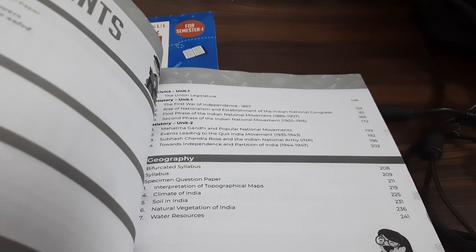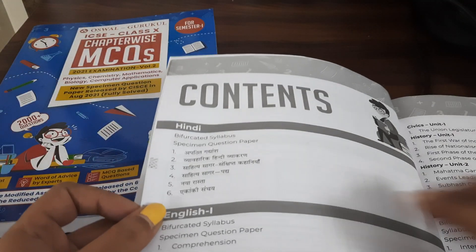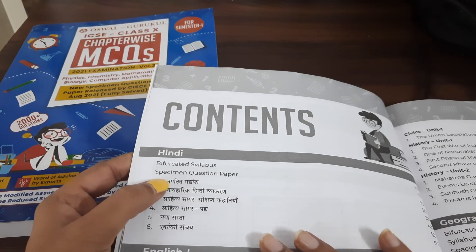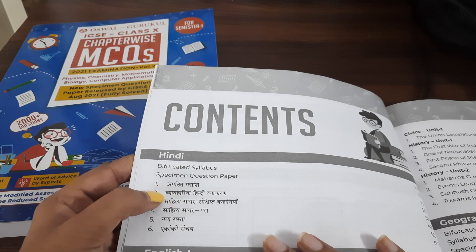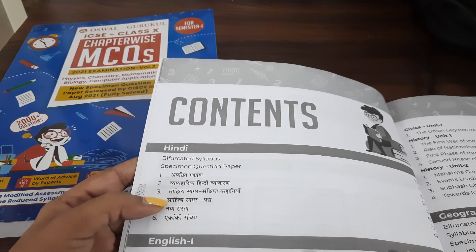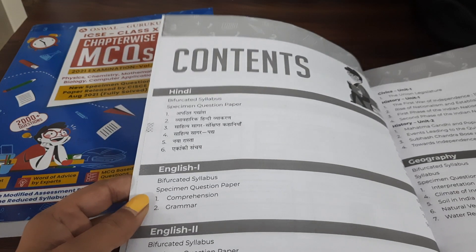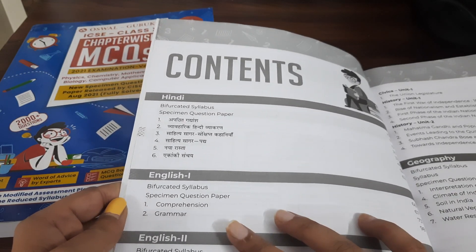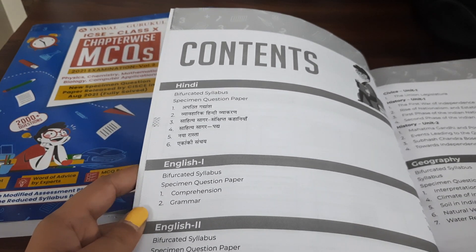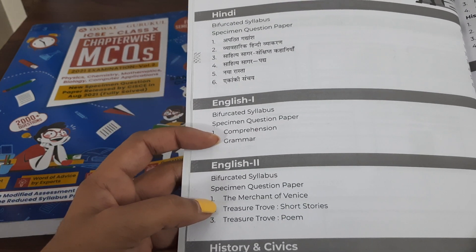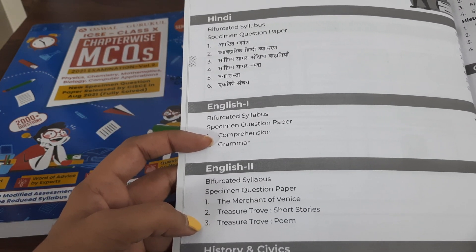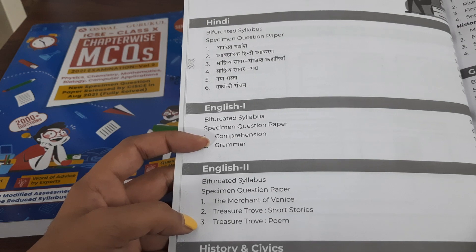Let me show you. Dear children, for Hindi, they have even covered Apathit Gadyansh and Vyakran. Along with the Sahit Chisagar and Nayarasta chapters. And even in English, they have covered Comprehension, Grammar for English 1. And for English 2, they have covered Merchant of Venice, Treasure Trove, Short Stories and Poems.